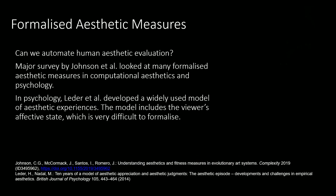One of the big challenges for evolutionary art is to understand measures of aesthetics, but the big question is: can we really formalise or automate human aesthetic evaluation when it appears so subjective? In a recent survey, Johnson et al. looked at many different approaches to formalised aesthetic measures for evolutionary art and design, including approaches from both computational aesthetics and psychology. However, a model from psychology by Leder and colleagues demonstrates that aesthetic experience extends beyond the observable properties of the object itself, including things like context and the affective state of the viewer — things that are very difficult or even impossible to formalise.